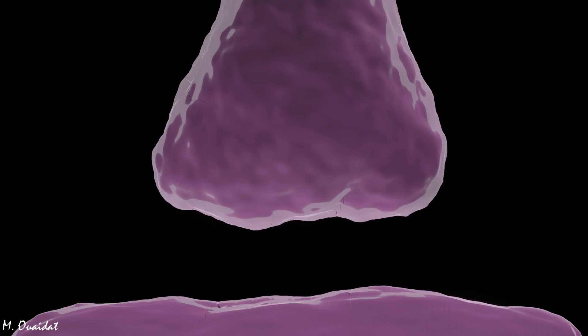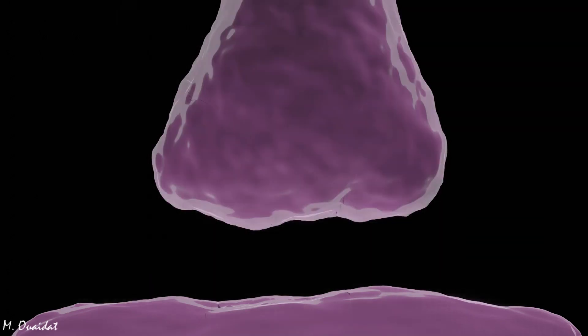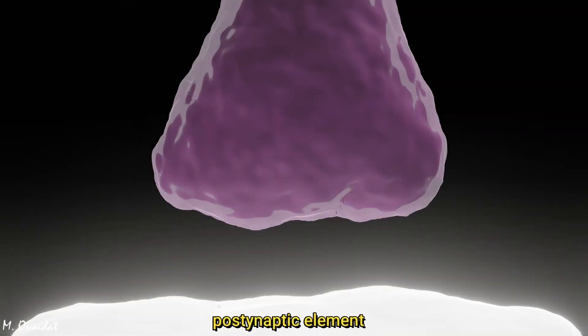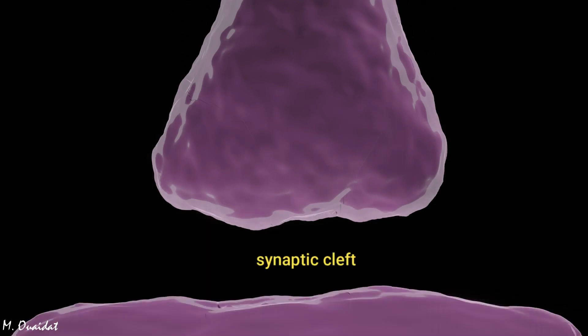A synapse is formed of three elements: the presynaptic element, the postsynaptic element, and the synaptic cleft. The presynaptic element corresponds to the terminal bud of a neuron.